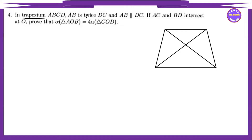Thank you very much. A, B is twice — twice the given value. But this is DC. So A, B and DC are given, so you can say A, B equal to 2DC.